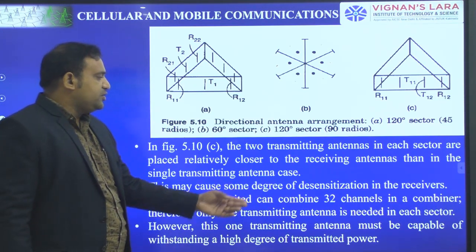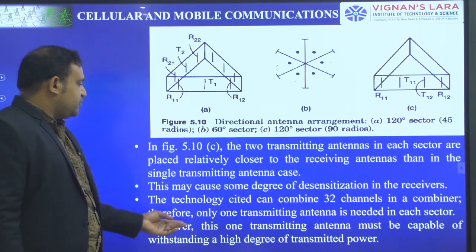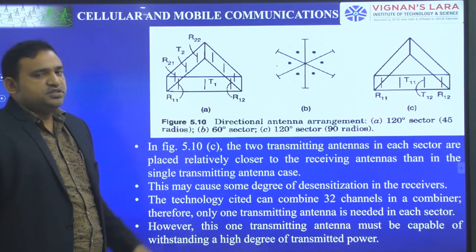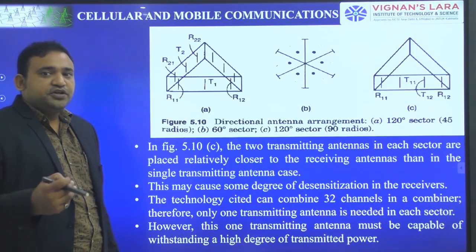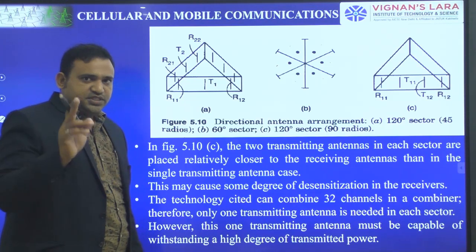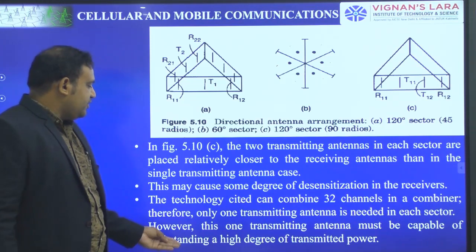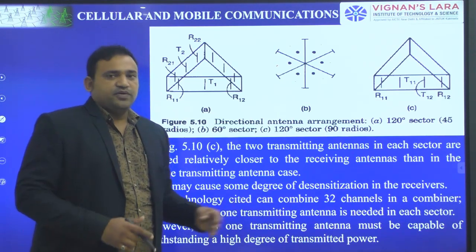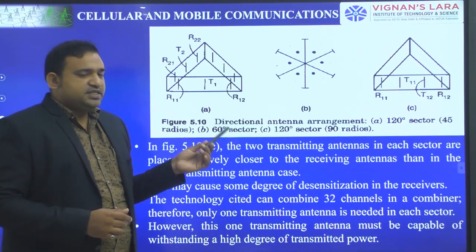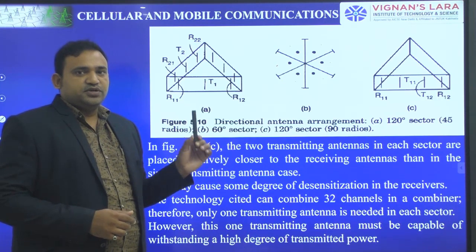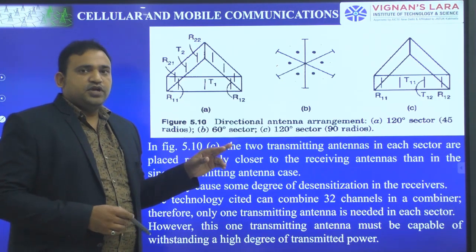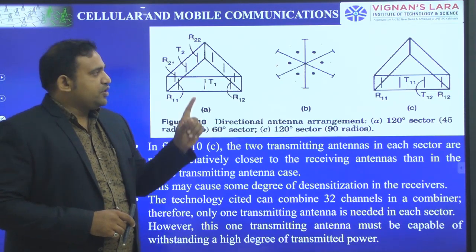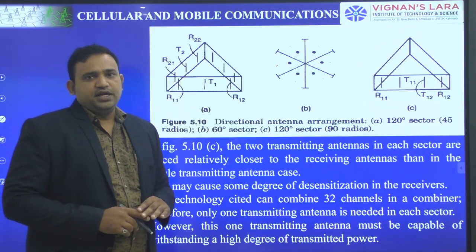A technology side can combine 32 channels in a combiner. Therefore, only one transmitting antenna is needed in each sector — we are using a 32-channel combiner, which is more efficient than the previous 16-channel combiner. However, this one transmitting antenna must be capable of withstanding a high degree of transmit power. Since we are using a 32-channel combiner, we can simply remove one transmitting antenna and use only one.